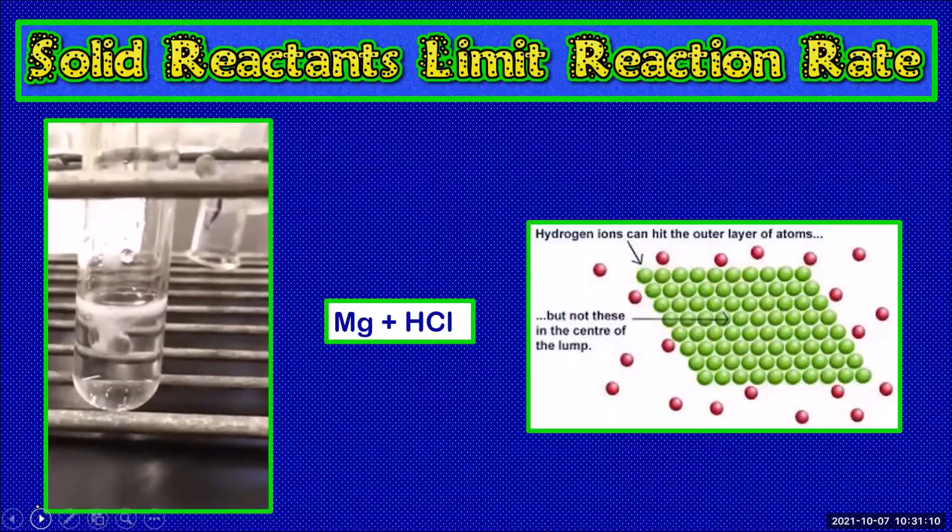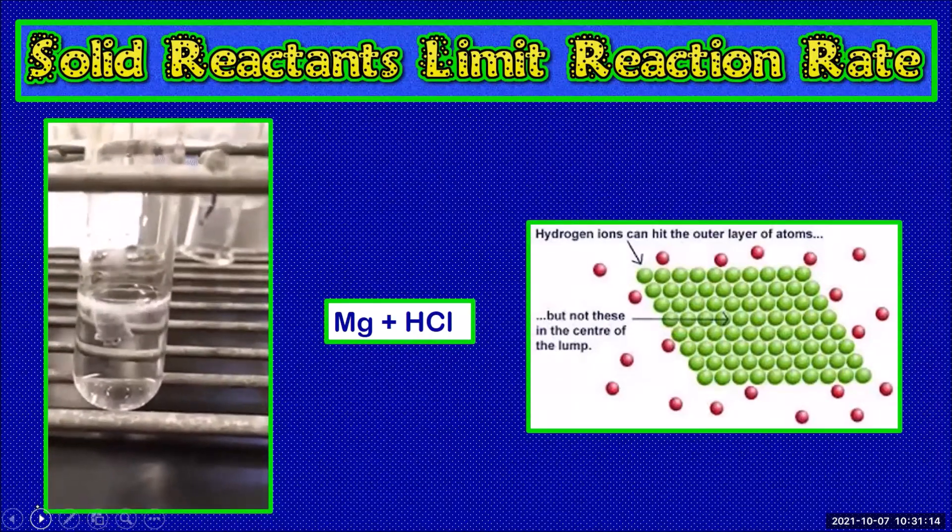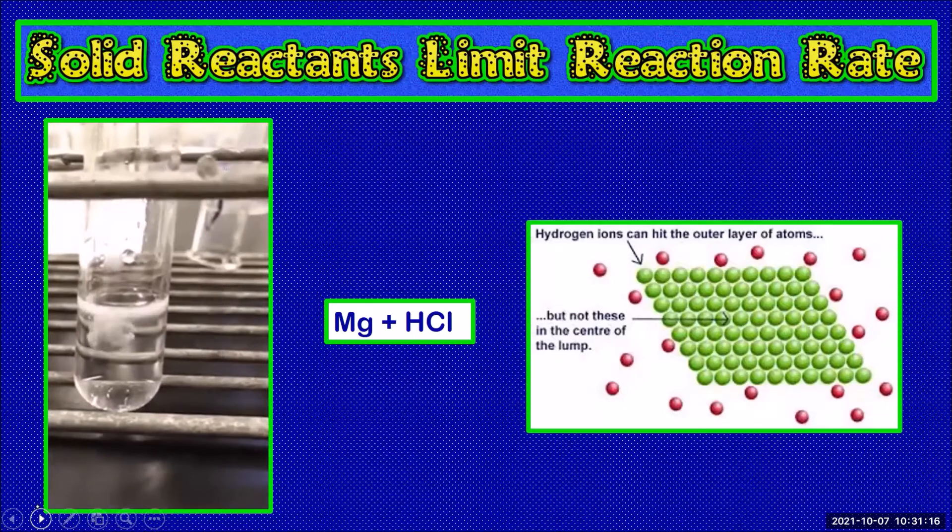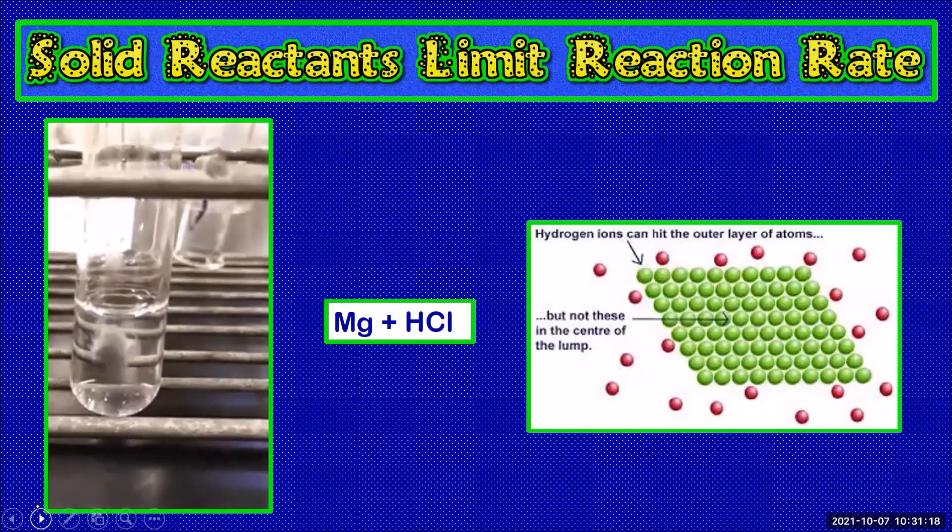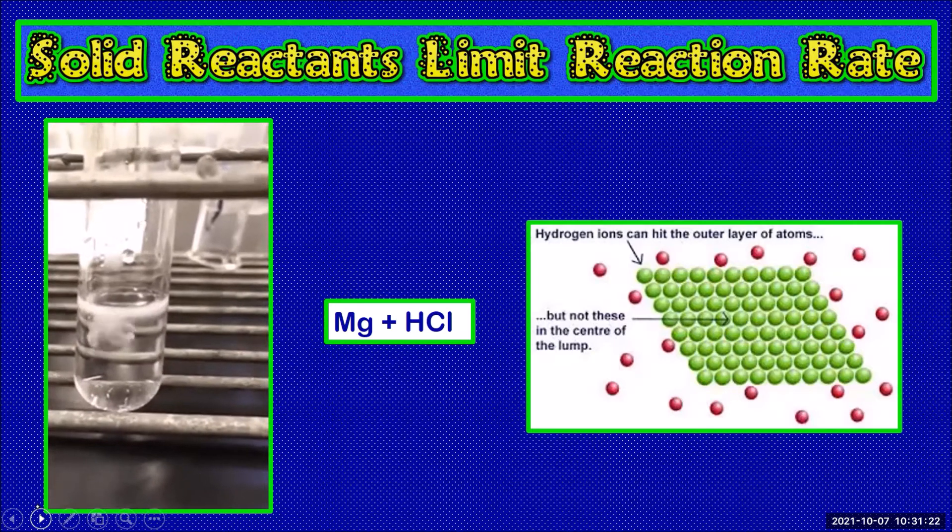When solid reactants are used in a large lump the rate of reaction is slow. This is because only the surface of the solid is exposed to the other reactant. Here we see a solid lump of magnesium reacting with the hydrochloric acid.